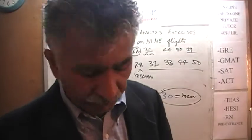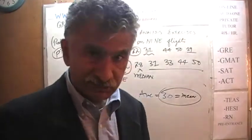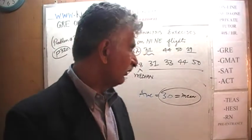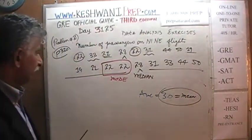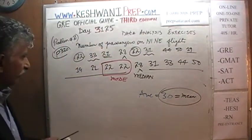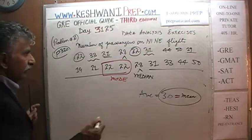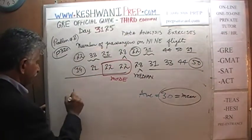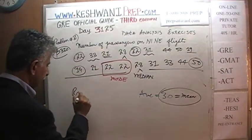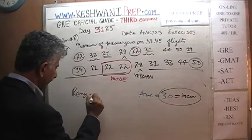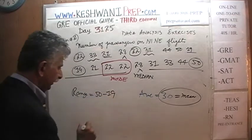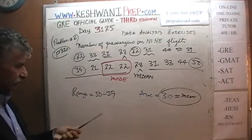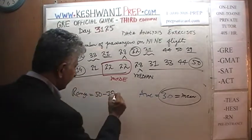Now let's worry about the range. The range itself is very straightforward — it's just 50 minus 19. 50 minus 20 would have been 30, so 50 minus 19 is 31.